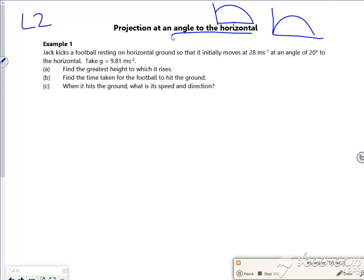Jack kicks a football resting on horizontal ground. That's good because we know it lands at the same place. It initially moves at 28 meters per second at an angle of 20 degrees to the horizontal.